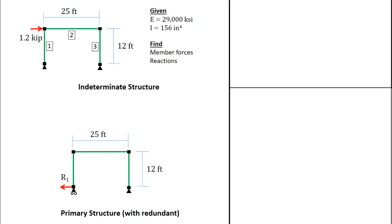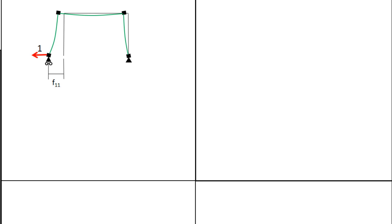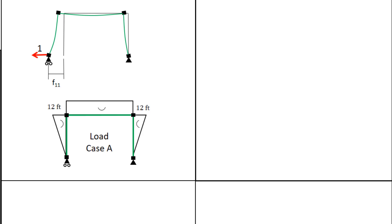We will now apply the applied load and the redundant force to the primary structure and look at the deflections and the moments. First, applying the redundant force to the primary structure, the deformed shape is shown. The deflection in the direction of the redundant is labeled F11 — that's the deflection at R1 due to a unit load at R1. The moment diagram in this case is shown here, and if you're not convinced about this moment diagram, pause the video and do the calculation.